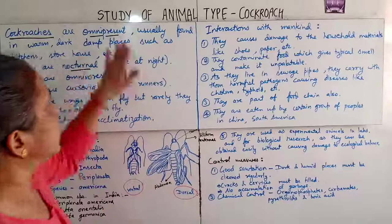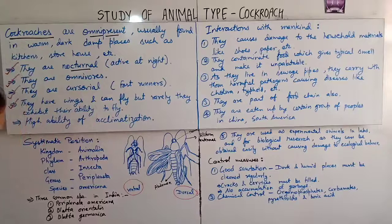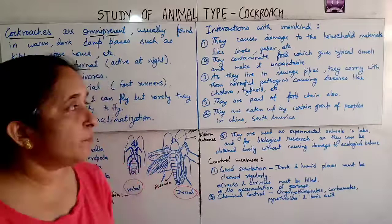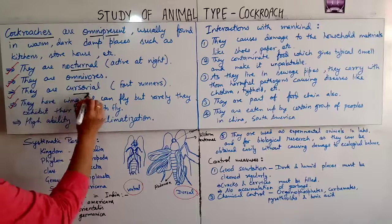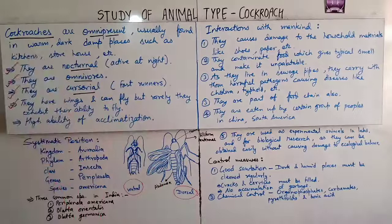Hello, dear students. Today in the chapter on the study of animal types, we will study about the cockroach. The first very important property is that cockroaches are omnipresent and usually found in warm, dark, and damp places such as kitchens and storehouses. They are nocturnal — very active at night. They are omnivorous and cursorial, meaning they are fast runners.